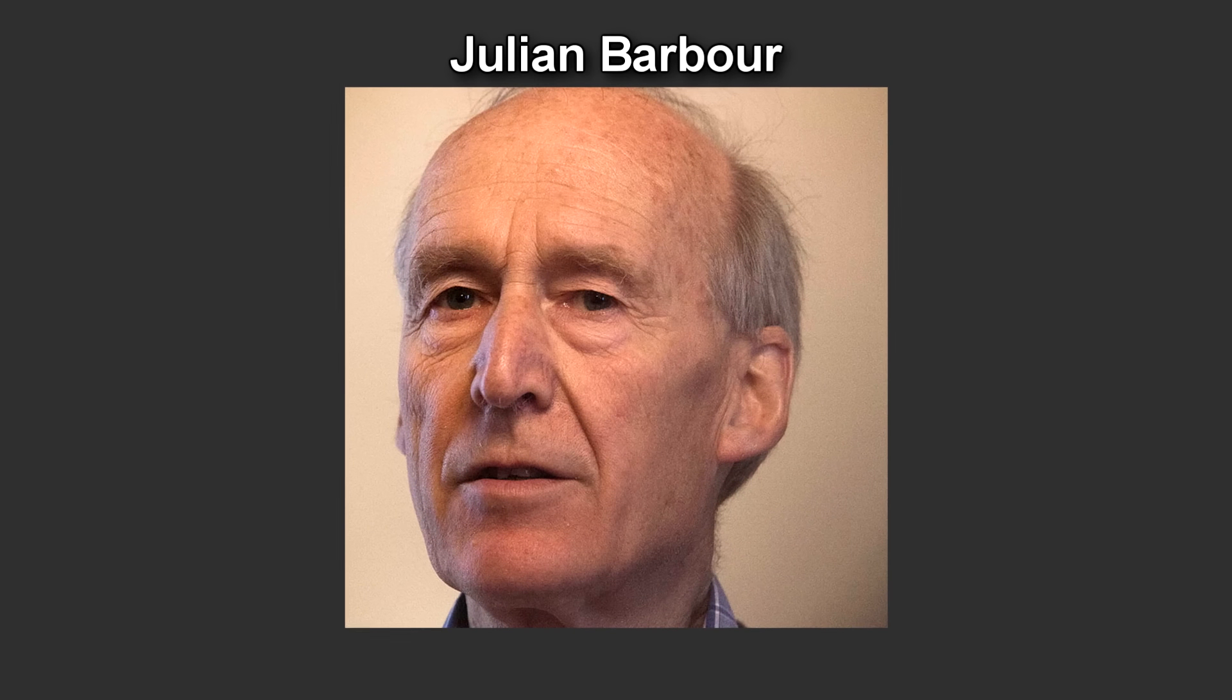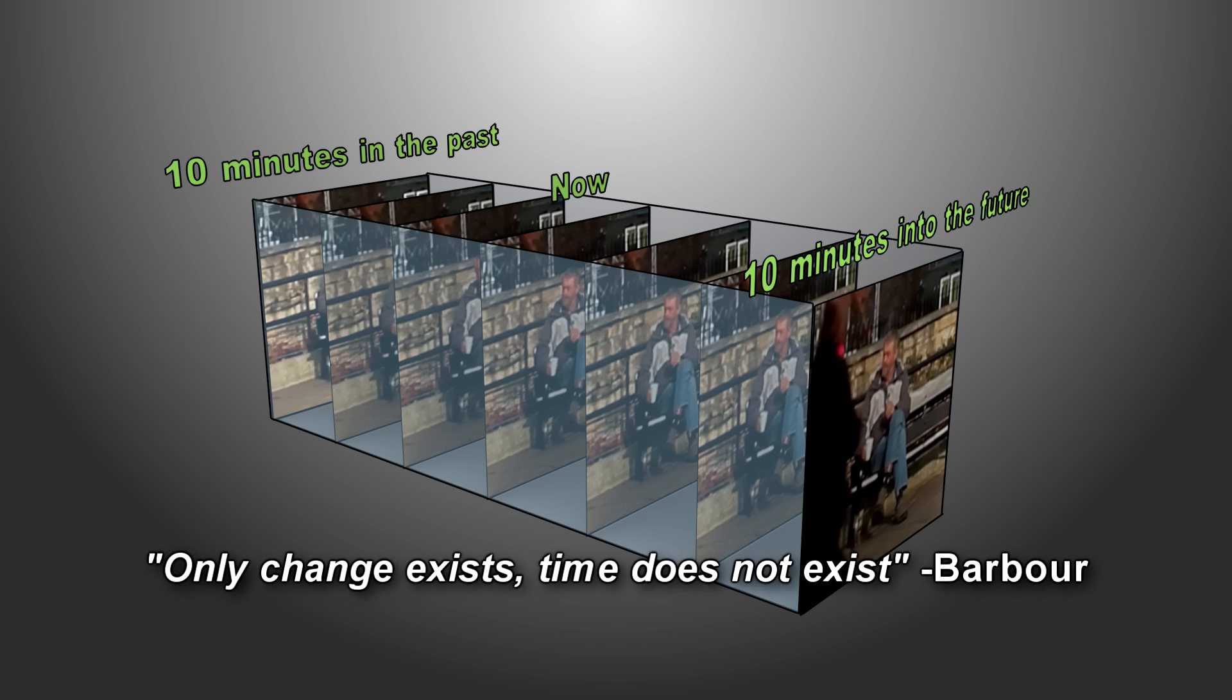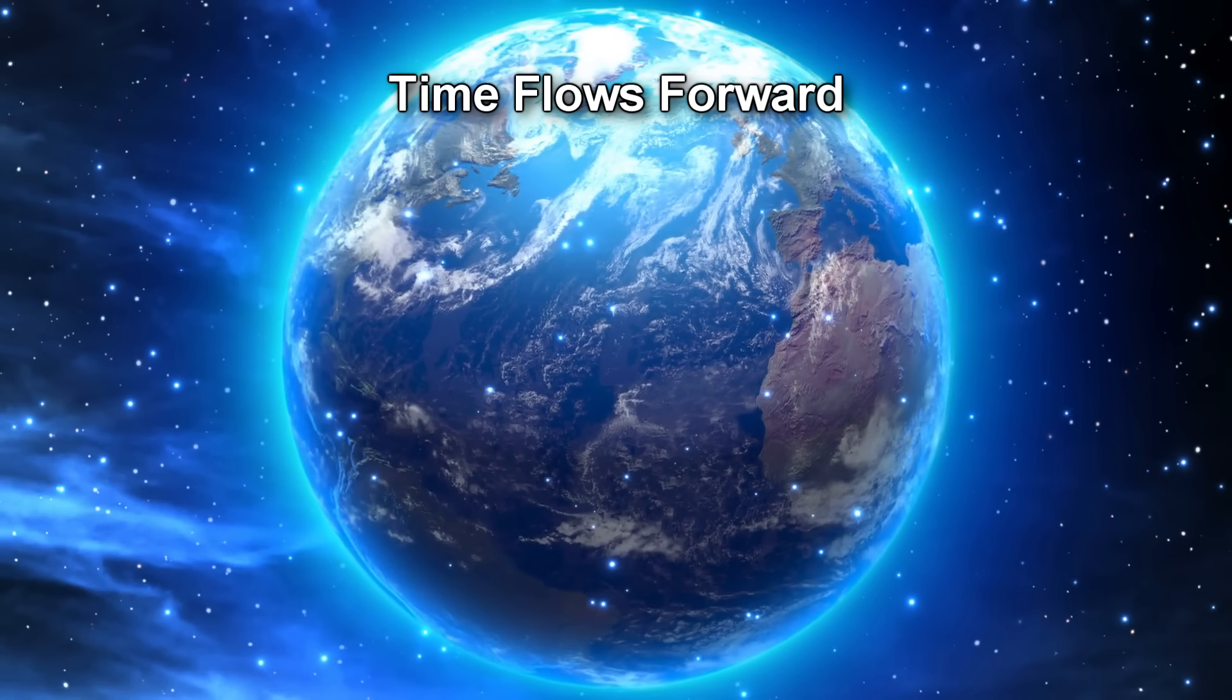John Barber, a British physicist, describes time as a succession of pictures, a succession of snapshots. To Barber, change is real but time is not. Time only exists because change is taking place, he says. But this is counterintuitive. Reality seems to be telling us that time does exist and that its arrow points in only one direction: forward.